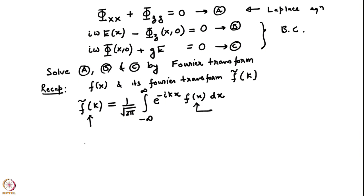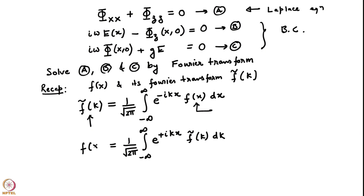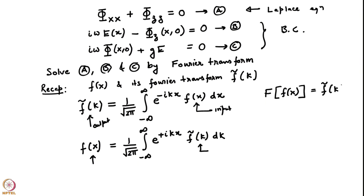This tells us that if you give an input f(x), it produces an output f̃(k) which is the Fourier transform of f(x). The reverse transform: if I know the Fourier transform of the function, the way to get back the original function is to integrate e^(ikx)·f̃(k)·dk. Because this is integration with respect to k, I get a function of x. Together they form the Fourier transform pair. I will indicate the Fourier transform operation as: F{f(x)} = f̃(k).